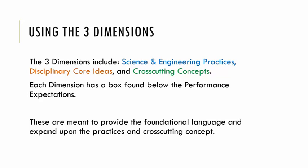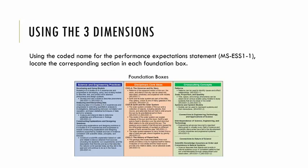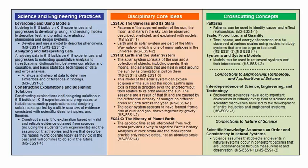Using the three dimensions — science and engineering practices, disciplinary core ideas, and cross-cutting concepts — each dimension has a foundation box found below the performance expectations. These are meant to provide the foundational language and expand upon the practices and cross-cutting concept. Within each foundations box, the coded name for the chosen performance expectation can be found. Locating the code MS-ESS1-1 will allow you to double-check that you identified the cross-cutting concept and practice correctly, as well as providing an elaboration on each dimension. Looking at the blue science and engineering practices box first, the code is located within the developing and using models section, providing an elaboration on using models to describe phenomena.